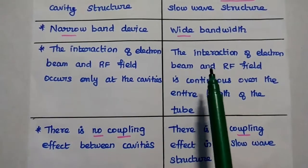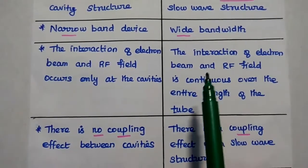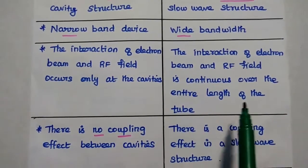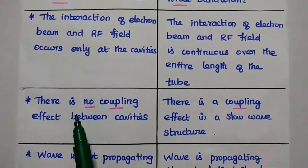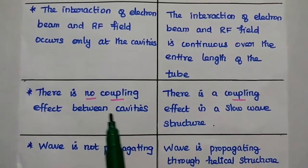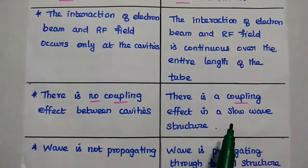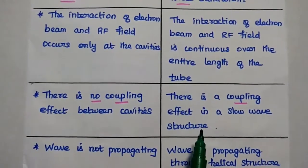But in this TWTA, the interaction of electron beam and the RF field is continuous over the entire length of the tube. There is no coupling effect between cavities. Here there is a coupling effect in the slow wave structure. Slow wave structure means helical structure.